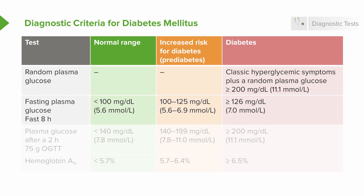Fasting plasma glucose after an eight-hour fast within the normal range should be less than 100 milligrams per deciliter. Pre-diabetes is defined as a fasting plasma glucose between 100 and 125 milligrams per deciliter, and overt diabetes occurs when the fasting plasma glucose is greater than or equal to 126 milligrams per deciliter.